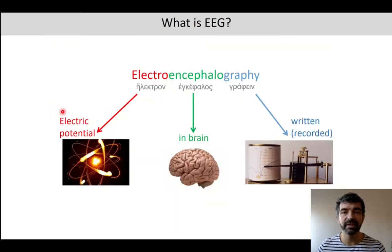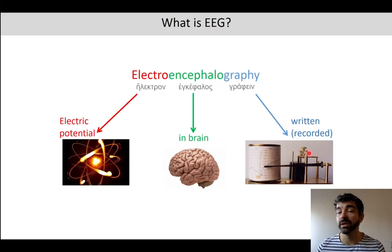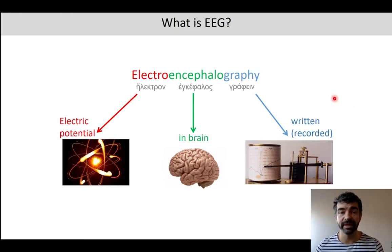What does electroencephalography mean? Electro refers to the electric potentials — the electricity produced in the brain by individual neurons. Encephalo refers to the brain, and graphy to the signal being recorded or written. To analyze the data, of course, you need to have a record of it.